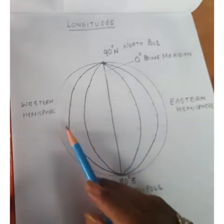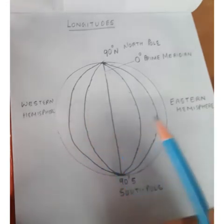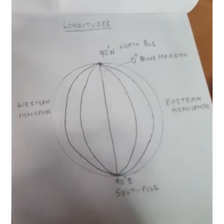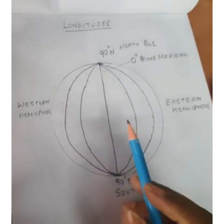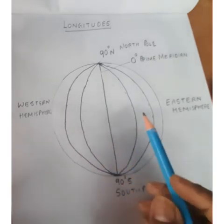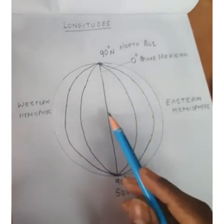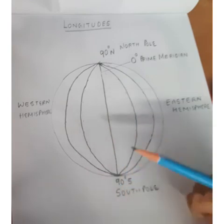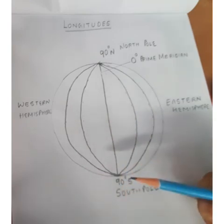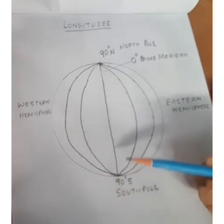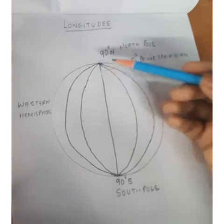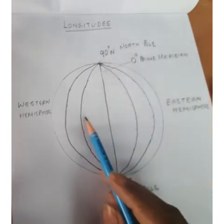You might have observed this diagram is looking like a fruit — can you guess? Yes, melon! So this is your diagram of longitudes.